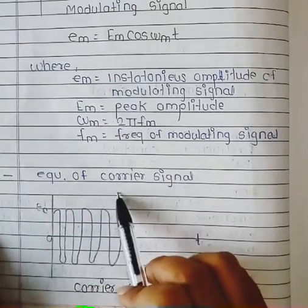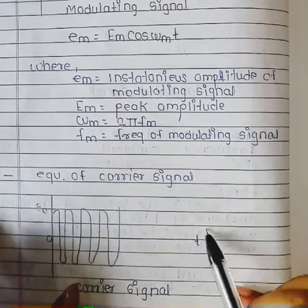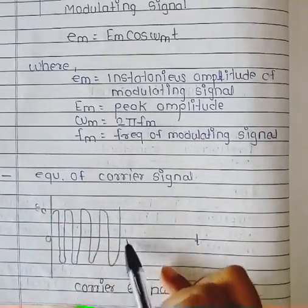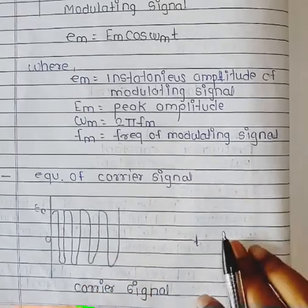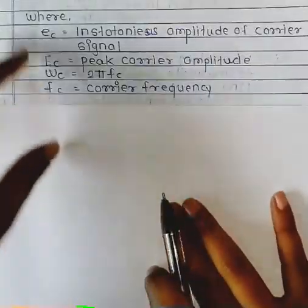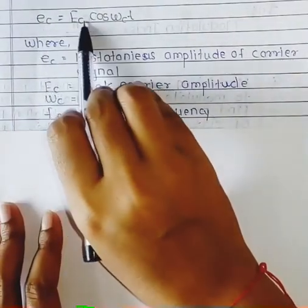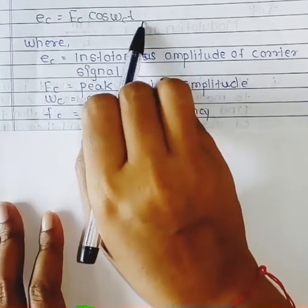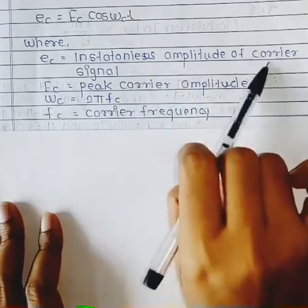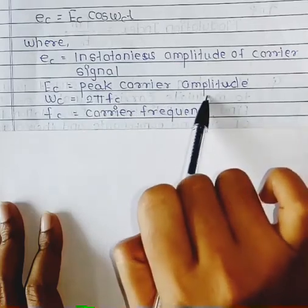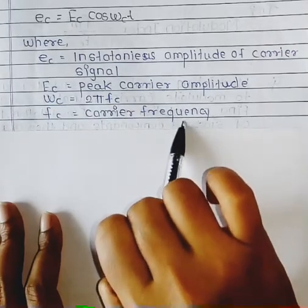Next, we find out the equation of the carrier signal. On the y-axis is E_c, and on the x-axis is time — this is the carrier signal. The equation for the carrier signal is: small e_c equals capital E_c cos(ω_c t). Here, small e_c is the instantaneous amplitude of the carrier signal, capital E_c is the peak carrier amplitude, ω_c equals 2π f_c, and f_c is the carrier frequency.